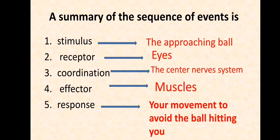A receptor is a cell or organ that detects a stimulus, and an effector is an organ that brings about a response, like a muscle or a gland.